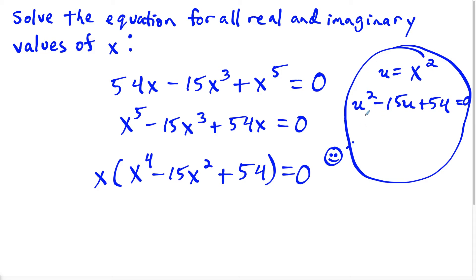And then if I break this down, this is going to be equal to u minus nine times u minus six equal to zero. Because if we notice here, negative nine plus negative six gives us the negative 15, and when we multiply negative nine and negative six, we get a positive 54.